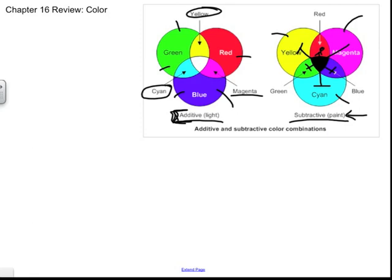The primary pigments are cyan, magenta and yellow. Secondary pigments are blue, red and green. But if I go over here to the additive side, they are flipped. So the primary colors were blue, green, red. And the secondary colors were cyan, magenta and yellow.